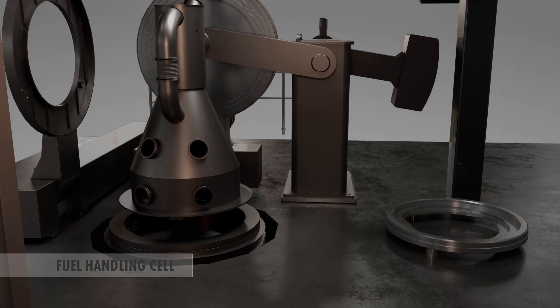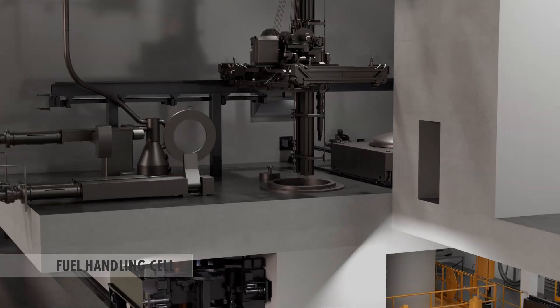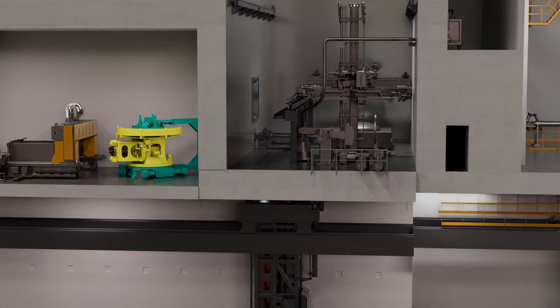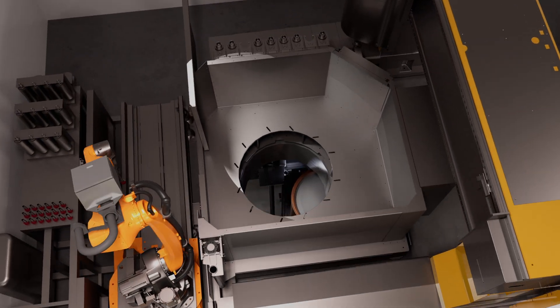The canister is lowered from the docking station with lifting screws and is then transferred to the machining station, where a contamination sample is taken from the top of the canister, and if necessary, the surface is decontaminated.